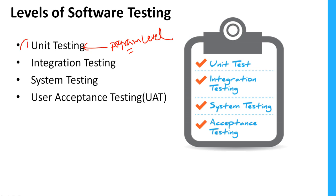Suppose the developers have implemented Component 1 and Component 2. They will integrate these two components to create a combined component and then test whether the integration is working properly or not. This is called integration testing, and it is also normally done by developers while integrating those modules. This is the second level of testing.